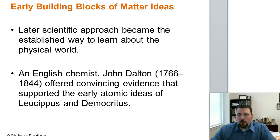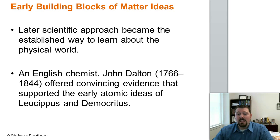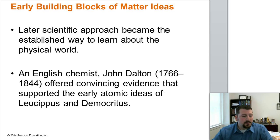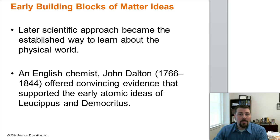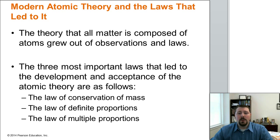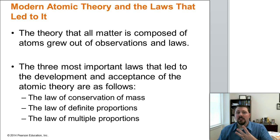The story really turns when we get to John Dalton, an English chemist. He was convinced by evidence that things are really made out of atoms, and he proposed an atomic theory. He likely came up with the idea through his own experiments and then found that Democritus had also supported it. Three main laws led Dalton to his atomic theory: the law of conservation of mass, which we saw in chapter one; the law of definite proportions; and the law of multiple proportions.